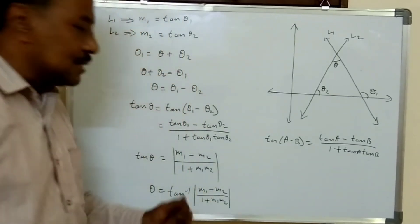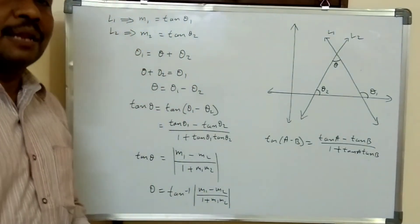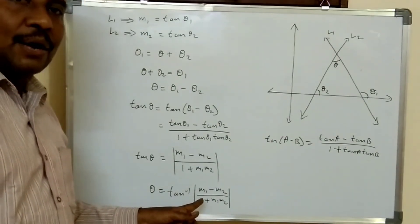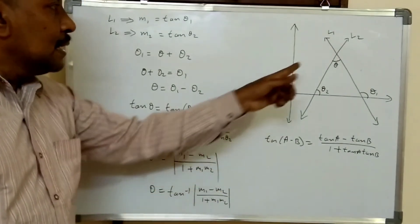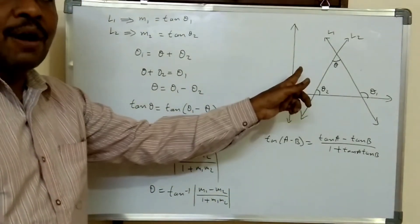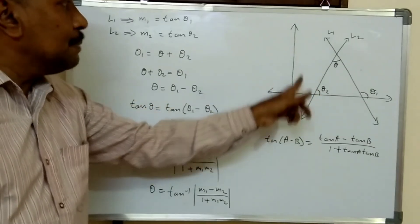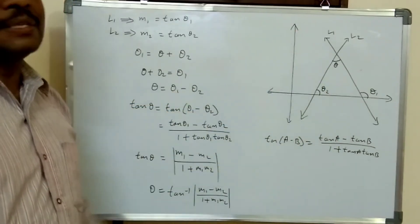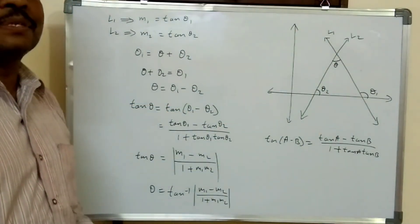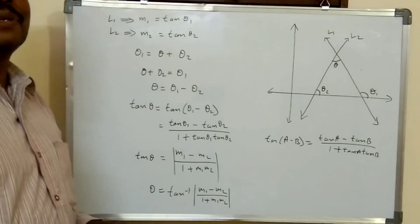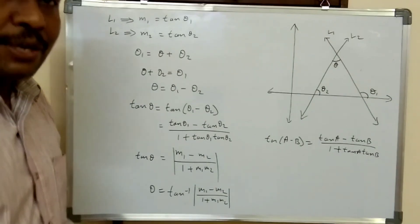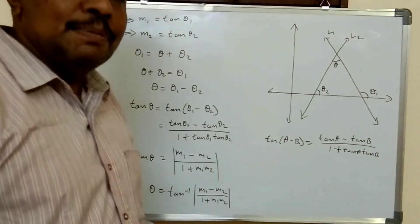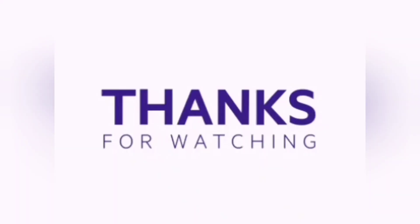This is how we derive the formula for finding the angle between two intersecting lines using their slopes. Hope you understood. Thank you very much for watching this video. Keep subscribing to the tutorials.